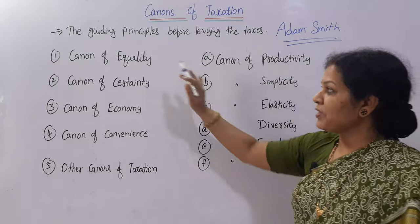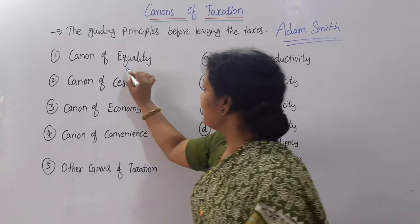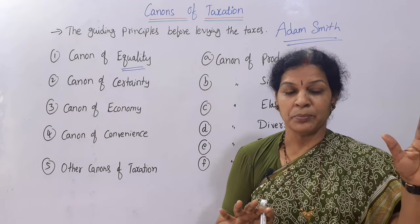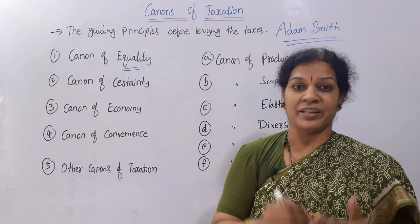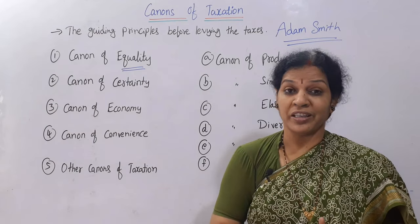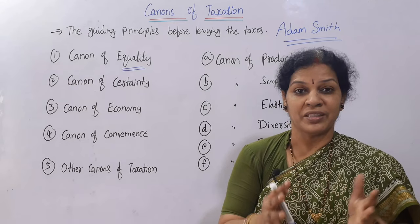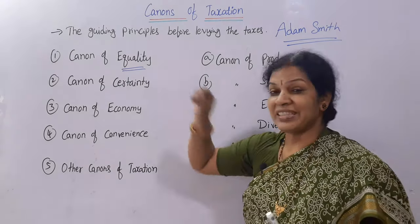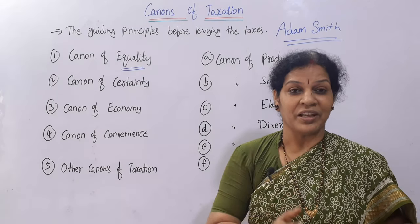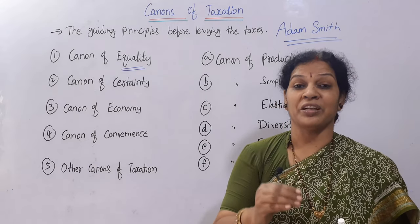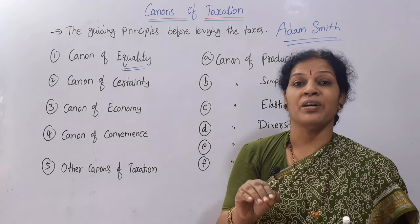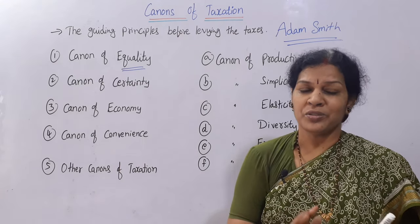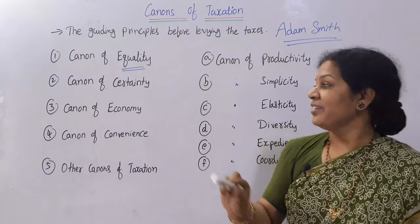The first canon is the canon of equality. When you charge tax on people, you must remember that higher income group people and small income group people should be taxed accordingly. Charge more tax on higher income people because they are capable and can afford to pay, whereas small income group people earn less, so charge them less. This is the canon of equality — doing justice to all kinds of people so that tax is not a burden on the small income group.